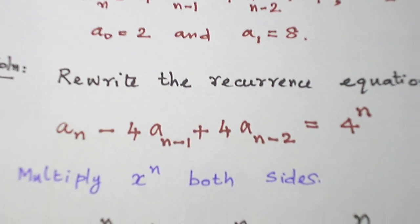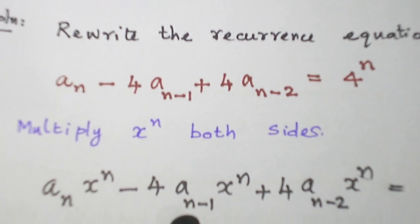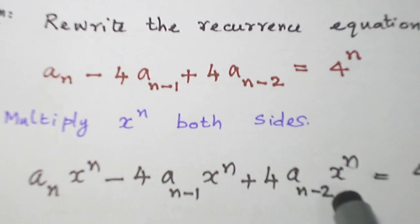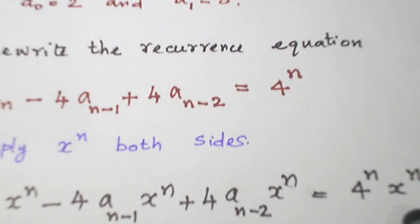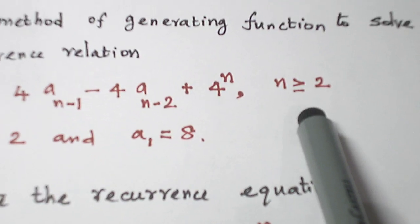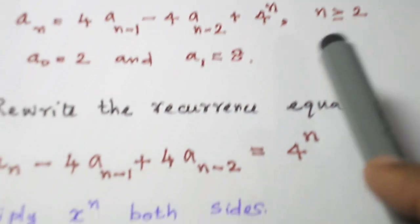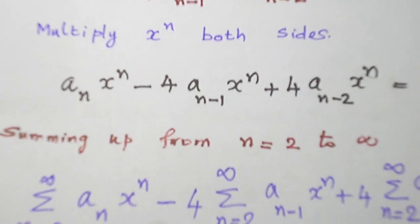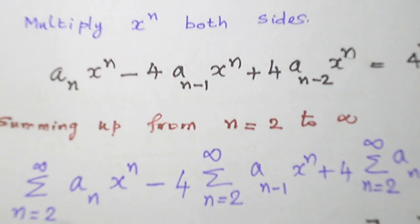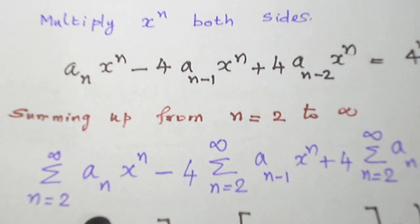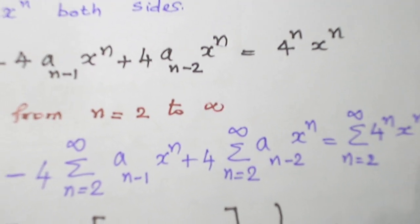The first step is to multiply x^n both sides. a_n x^n, a_{n-1} x^n, a_{n-2} x^n, 4^n x^n. And we are given the values n greater or equal to 2. So let us make a summation from n = 2 to infinity. Since we are given the value n greater or equal to 2, each term I take the summation n = 2 to infinity.